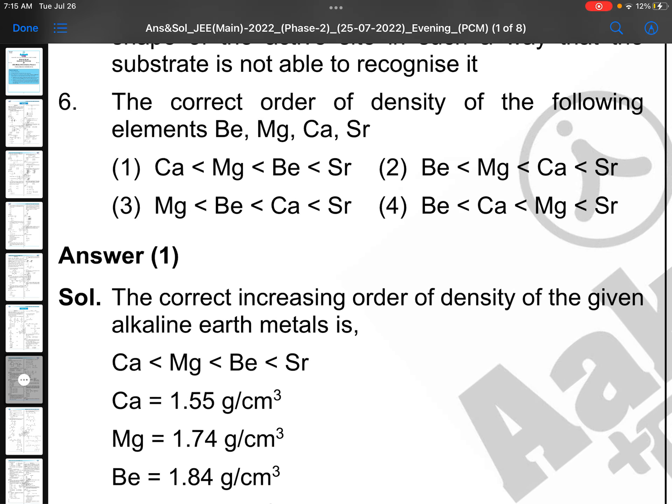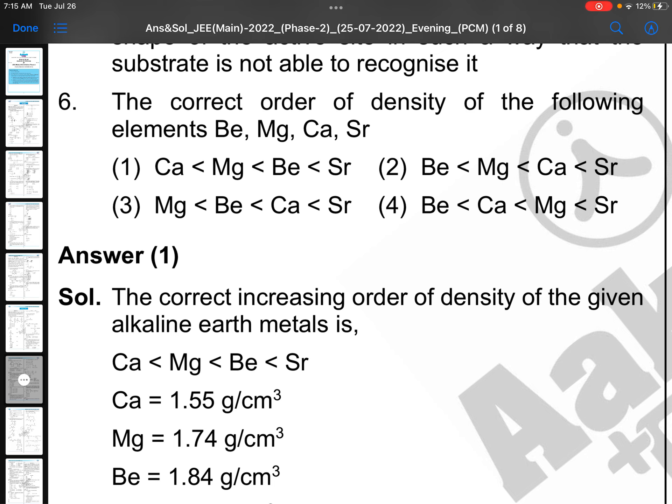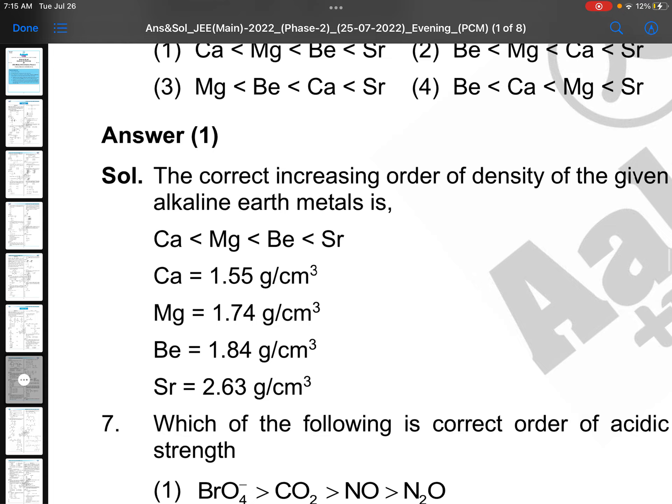The correct order of density of the following elements. Morning session, sodium, potassium exception was there. Now the exception is beryllium, magnesium. Actually, up to calcium decreases, then increases. So calcium is the least, then magnesium, then beryllium, then strontium. This is a very good exception taken as it is from NCERT.